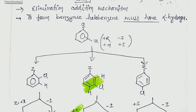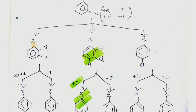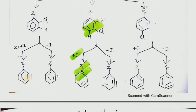This is the elimination-addition mechanism to form aniline. From benzyne, the halogen must have at least one ortho hydrogen. Here are some situations with respect to the Cl or halo atom — if any substituent is present on the benzene ring, we can see how it will affect the formation of benzyne using three examples.